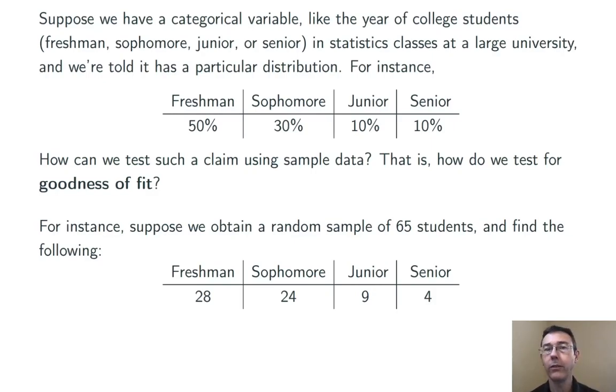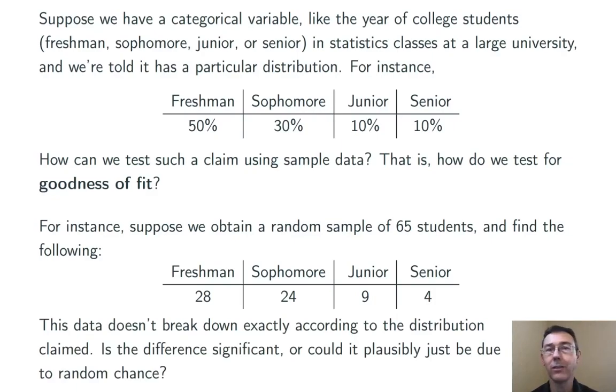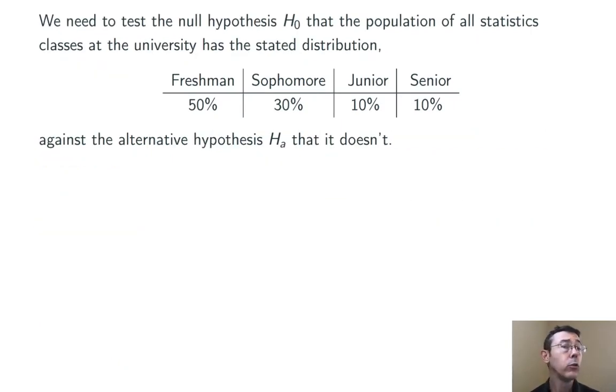So, obviously this data doesn't adhere exactly to that distribution in that first table. But are those differences just due to random chance, or are they statistically significant?